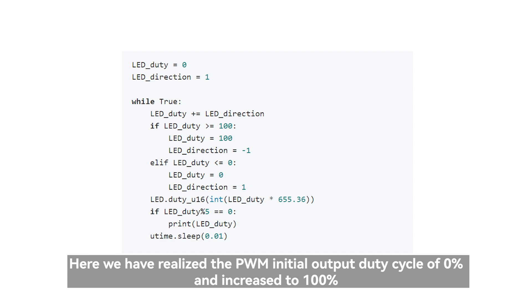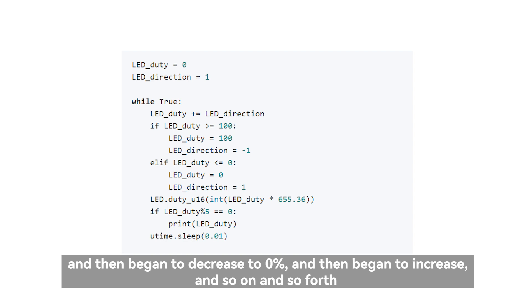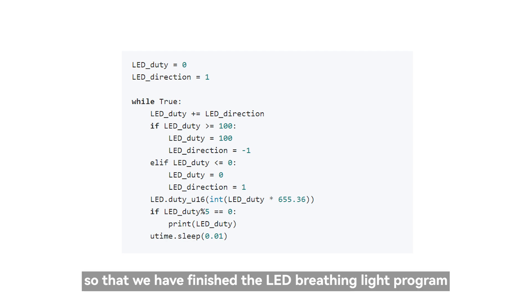Here we have realized the PWM initial output duty cycle of 0% and increased to 100% and then began to decrease to 0% and then began to increase and so on and so forth. So we have finished the LED breathing light program.